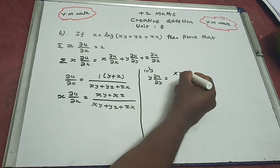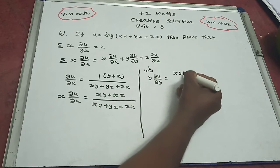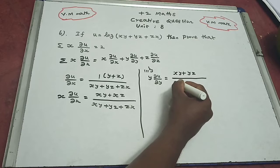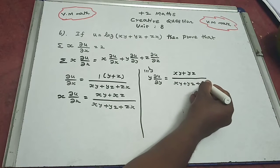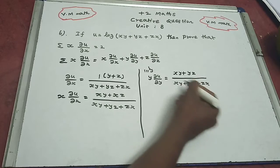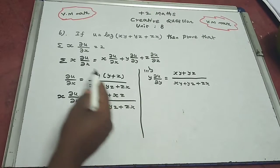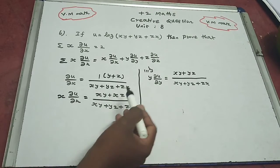So we get y(x + z) divided by xy plus yz plus zx. This is how we work out the first term.